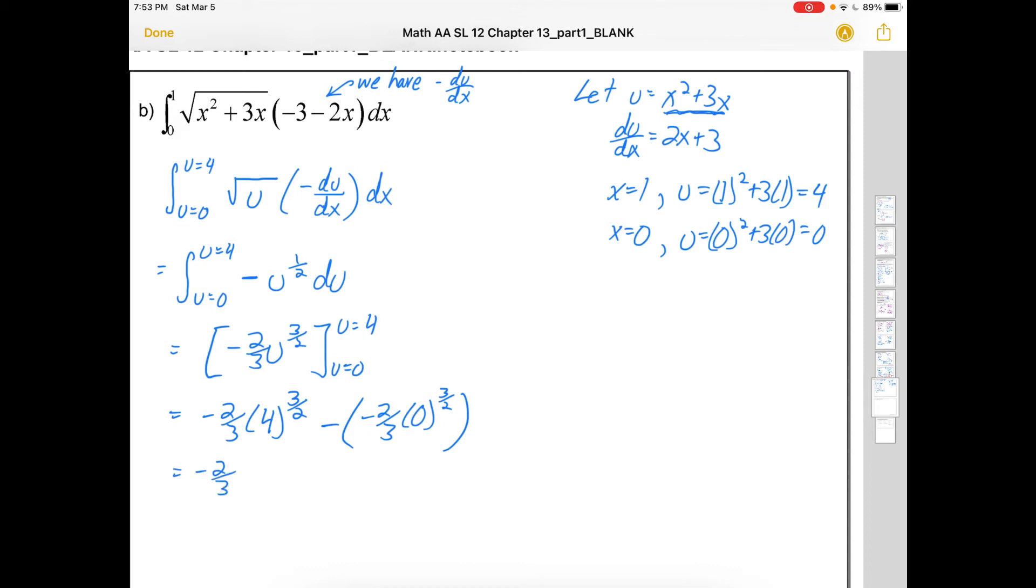So that's negative 2 thirds, 4 to the 3 over 2. That means when you square root it gives you 2, and cube it gives you 8. This will be 0. So we'll get negative 16 thirds. So there was no point to sub back into x in this definite integral.